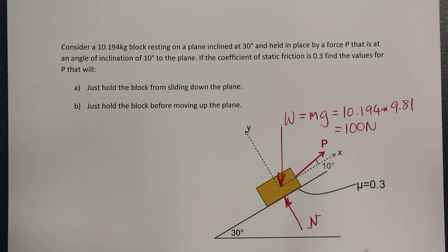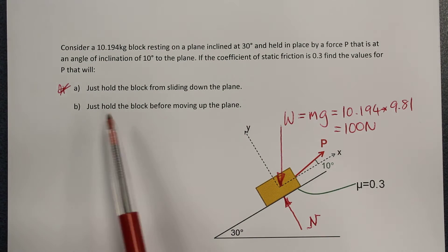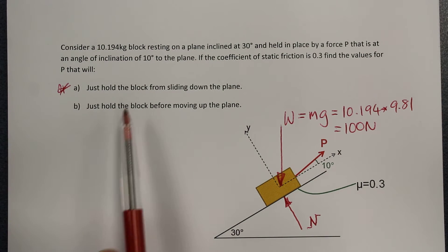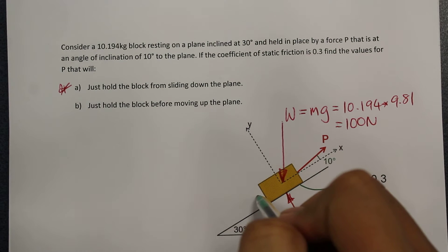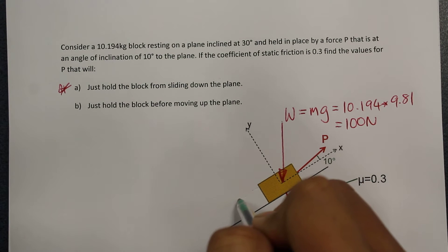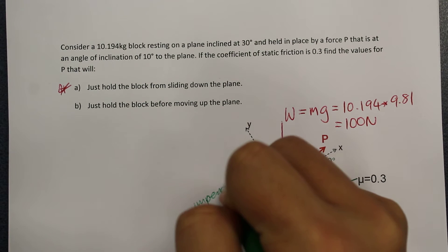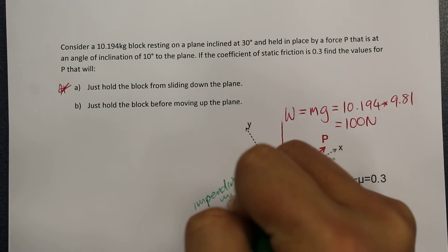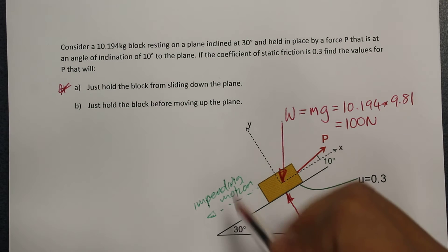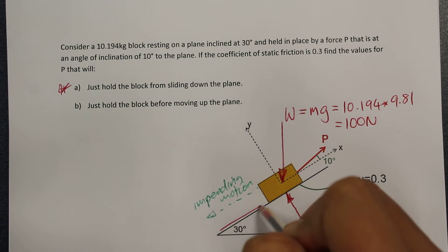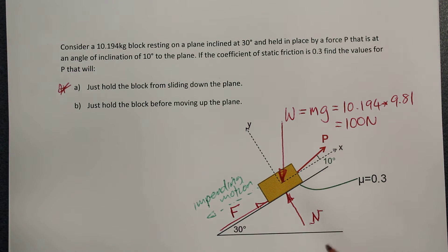The fourth force — we are answering question A first. In this case the block is just about to slide down the plane, so our impending motion is going down in that direction. If the block is about to move down the hill, then we will see a friction force opposing that motion, so it will act up the hill. This will have a value F.